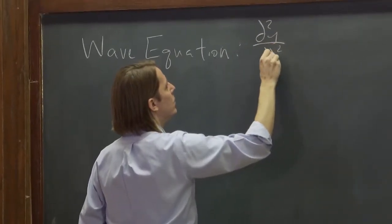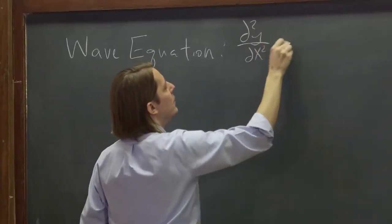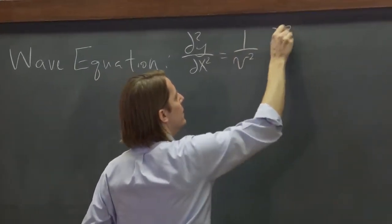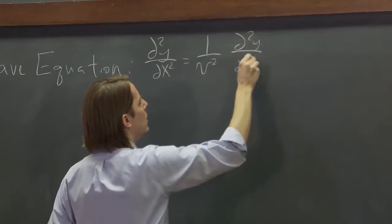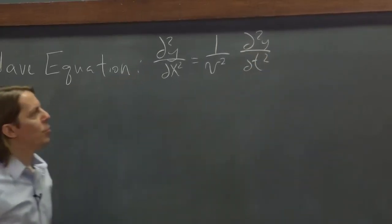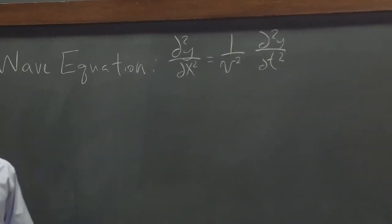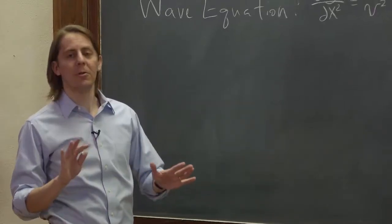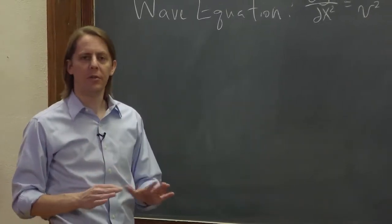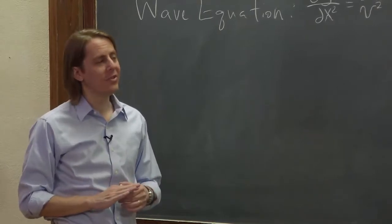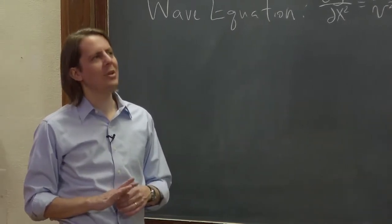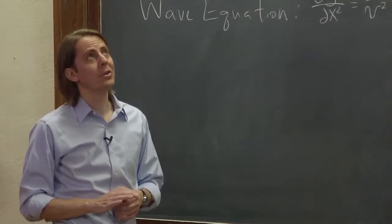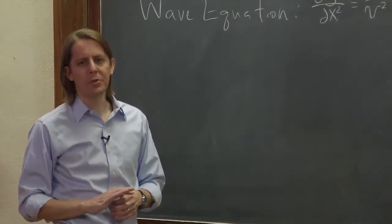d²y/dx² equals 1 over velocity squared d²y/dt². So remember, we're just guessing solutions, plugging them in, making sure they work. But the mathematicians have this theorem that says that's okay, this uniqueness and completeness theorem. And it says that solution is unique and complete, meaning it is the real motion of the string, if you have a boundary condition for each order of the differential equation.